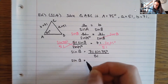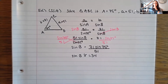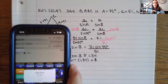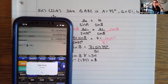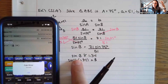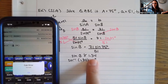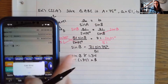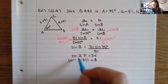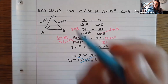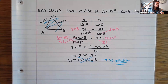Sine B equals 71 times sine of 75 degrees all divided by 51. Plugging this into the calculator gives sine B is about 1.34. When I try to take the inverse sine, my calculator says 'domain error.' This happens because the sine function only outputs values between negative one and one — 1.34 is outside that range. So no angle can produce this value, meaning there is no solution. This is not actually a triangle.